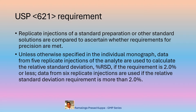data from 5 replicate injections of the analyte are used to calculate the relative standard deviation %RSD if the requirement is 2% or less, and data from 6 replicate injections are used if the relative standard deviation requirement is more than 2%. So, for %RSD less than 2%, data from 5 replicate injections is required.